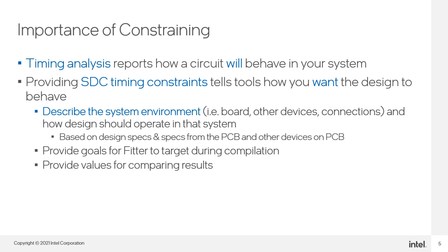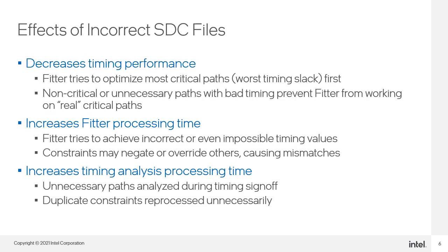Constraining your design tells the software tools your desired timing goals so that the fitter and timing analyzer can properly report back if your design can operate with the timing requirements. To constrain your design, you will need to understand the timing of the system environment such as the board delays and timing requirements of the other components connected to your FPGA. What if your SDC file is not exactly right, or some constraints are off by a little bit, or some constraints are missing? These incorrect or missing constraints can cause the fitter to make incorrect optimization choices and potentially spend too much time trying to reach timing closure in certain areas of your design where timing is more restrictive than necessary.